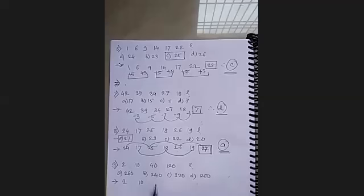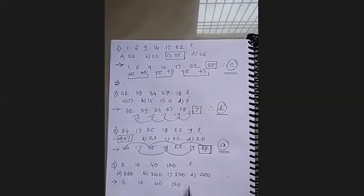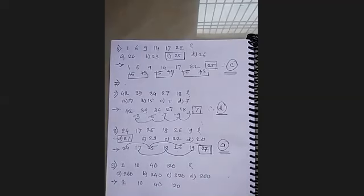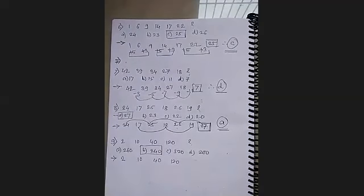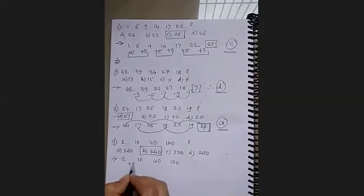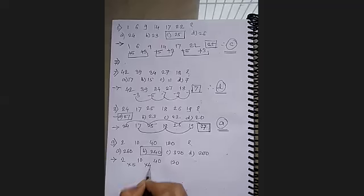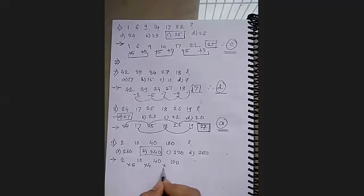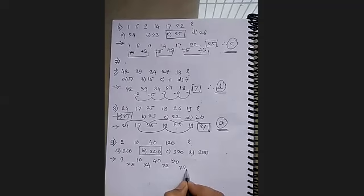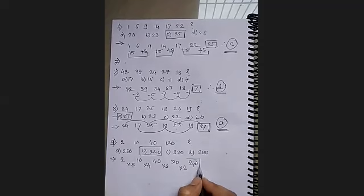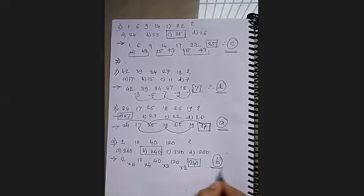So 2, 10, 40, 120, and we will write the answer. Okay, so most of you are selecting option B. Let's verify. So what is the relationship? 2 into 5 becomes 10. 10 into 4 becomes 40. 40 into 3 is 120. So here it is multiply by 5, multiply by 4, multiply by 3. So it should be multiplied by 2. So it becomes 240. So it is option B. And therefore your answer is B. Fine. So this is about.